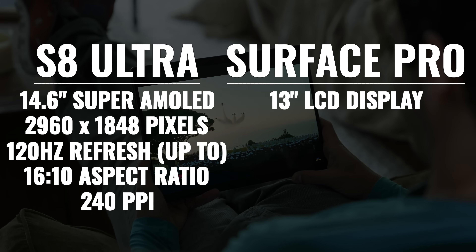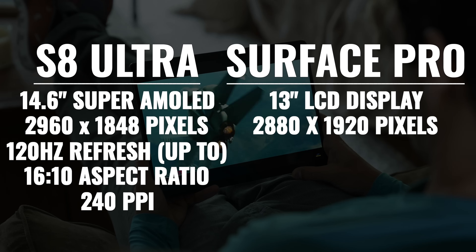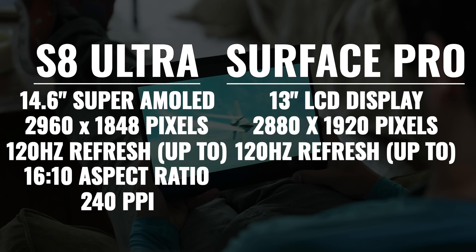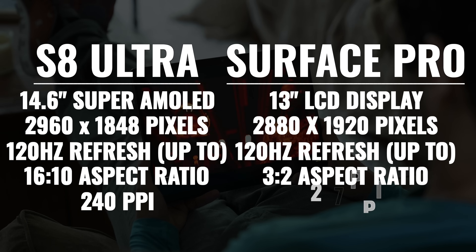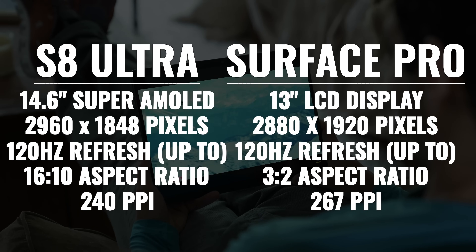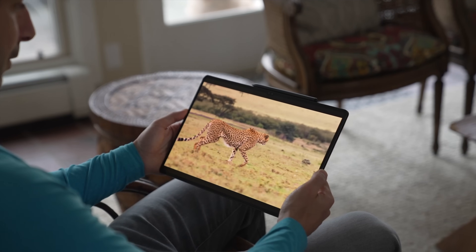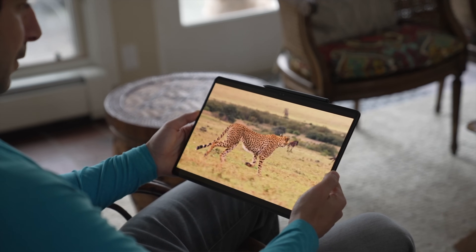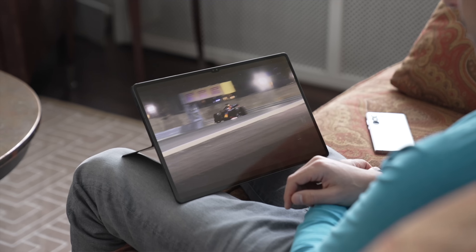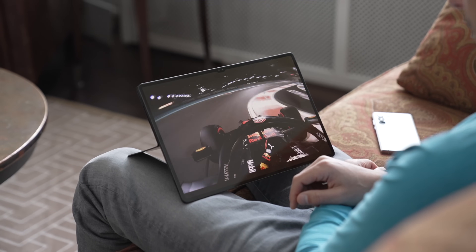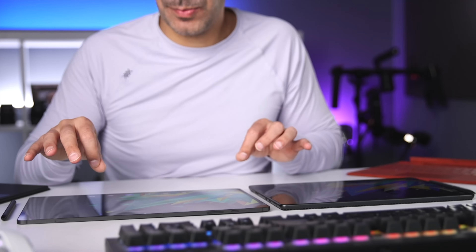The Surface Pro 8 has a 13-inch LCD display with a resolution of 2880 by 1920, also up to 120Hz refresh rate, a 3 by 2 aspect ratio, and a higher pixel density of 267 pixels per inch. While all these specs are nice and the Surface Pro 8 does have a good display, the Tab S8 Ultra is just amazing — it might be the nicest display I've used on any tablet so far. The colors are vibrant, it's Super AMOLED so we're getting very dark blacks, and the aspect ratio is amazing for watching video because the image pretty much uses up the entire display.